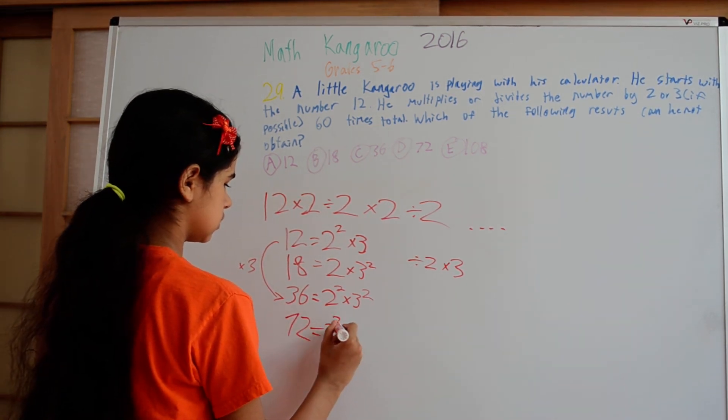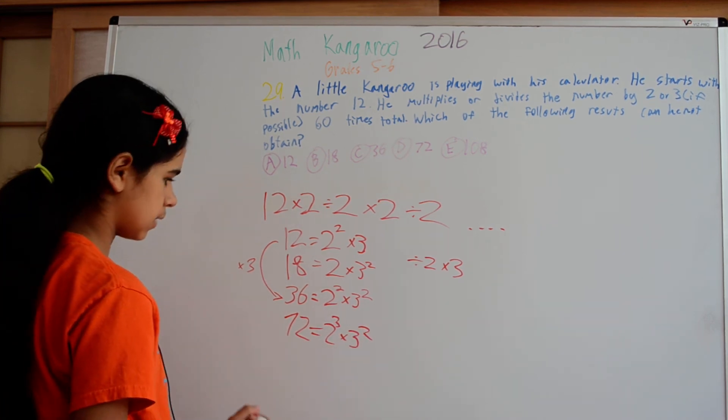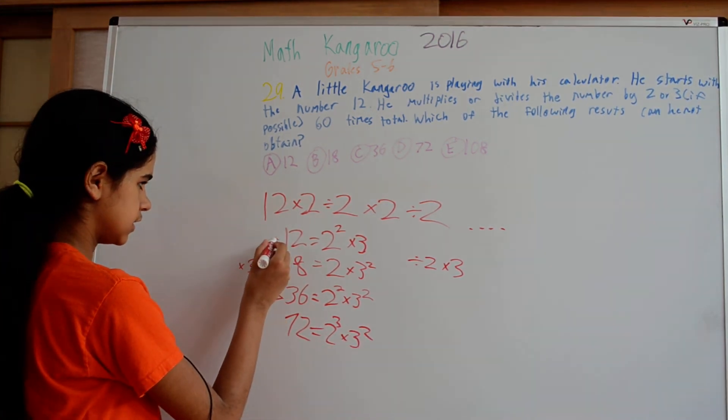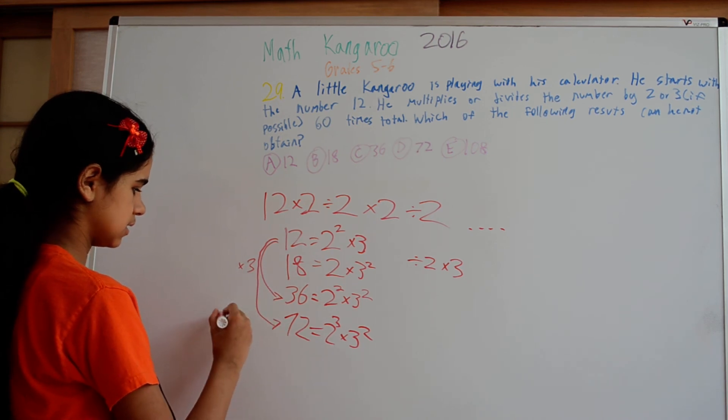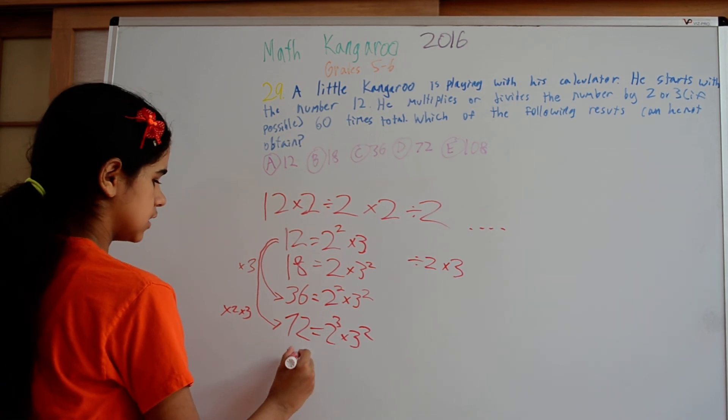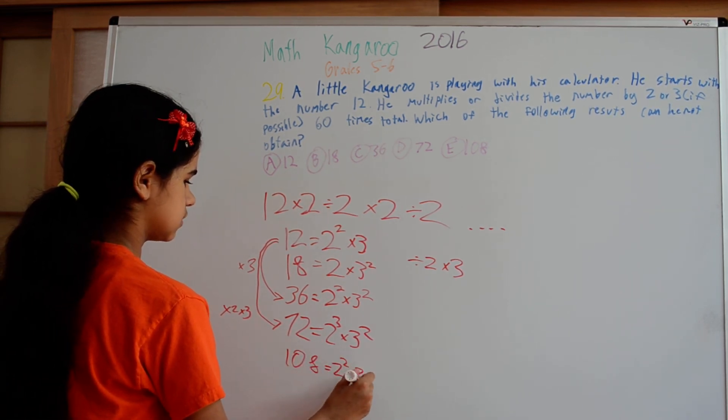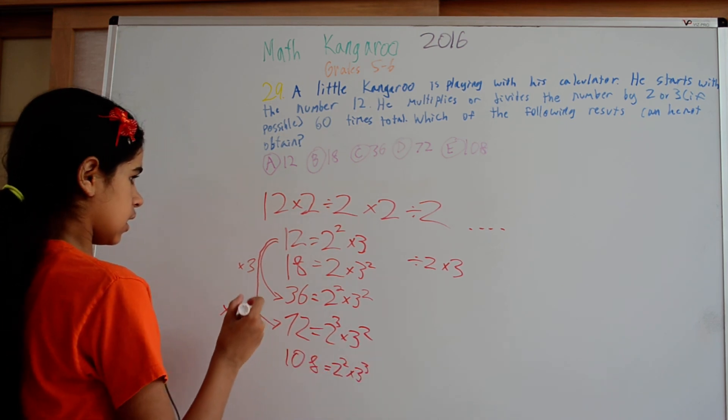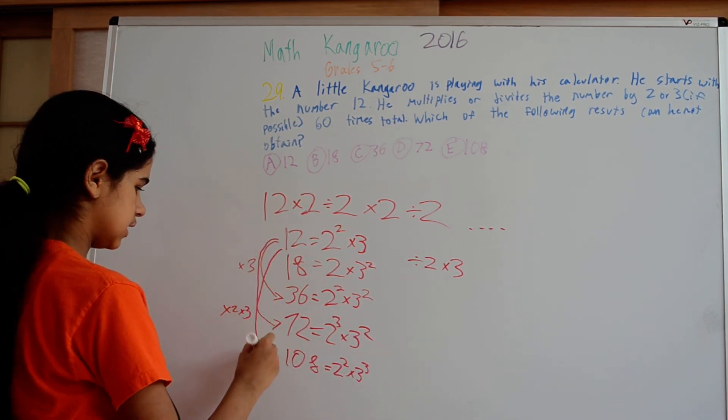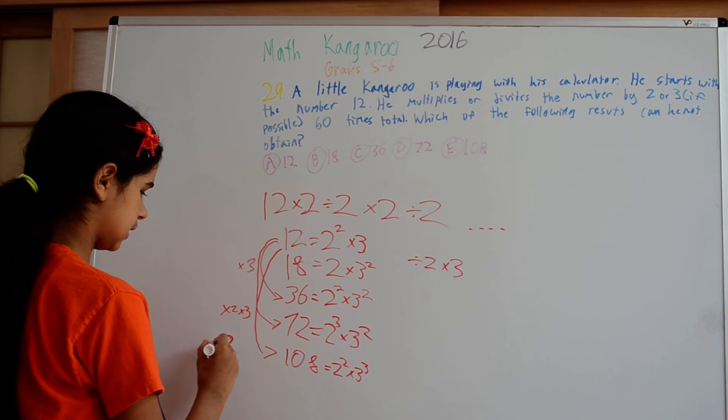72 is 2 cubed times 3 squared. And when we go from 12 to 72, what we would have to do here is multiply by 2 and multiply by 3. And 108 is 2 squared times 3 cubed. So to go from here to here, we would have to multiply by 3 twice.